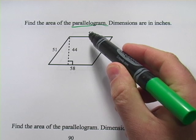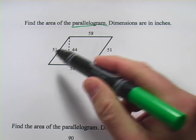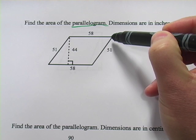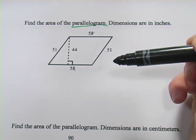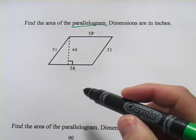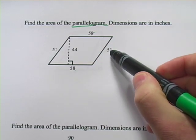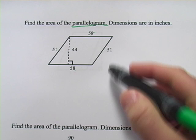It's got two sets of parallel sides that are the same length. So the top and the bottom, they're parallel to each other, and they're the same length. You can see here, 58 and 58, and the sides here, the left and right sides, are parallel to each other, and also the same length. In this case, 51.